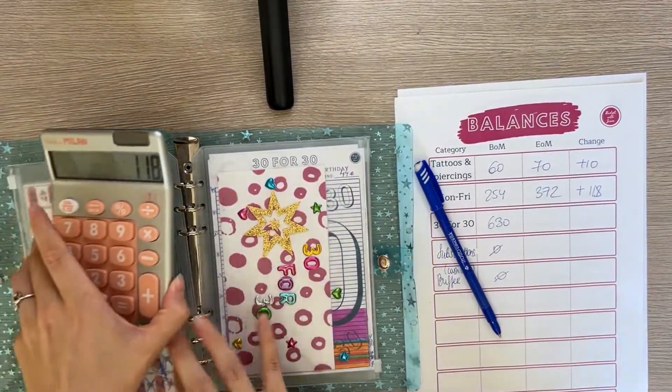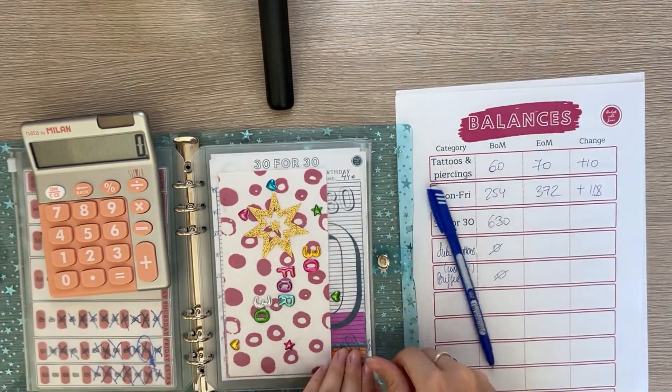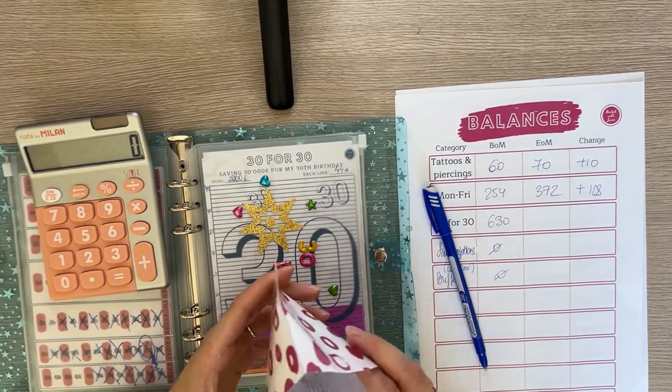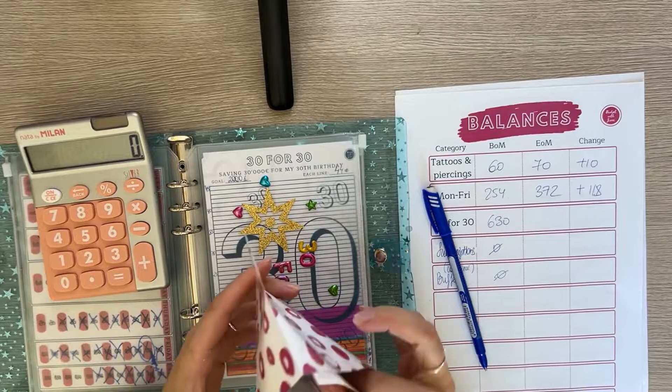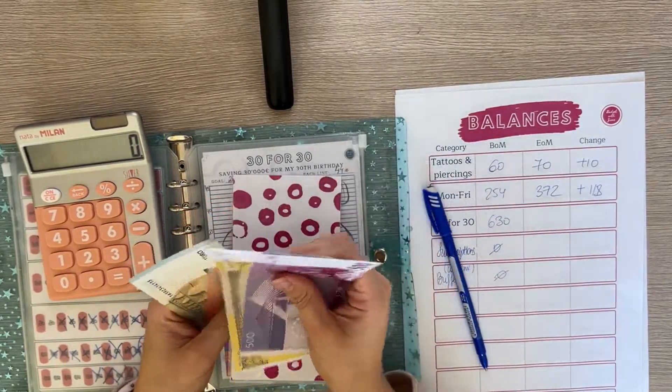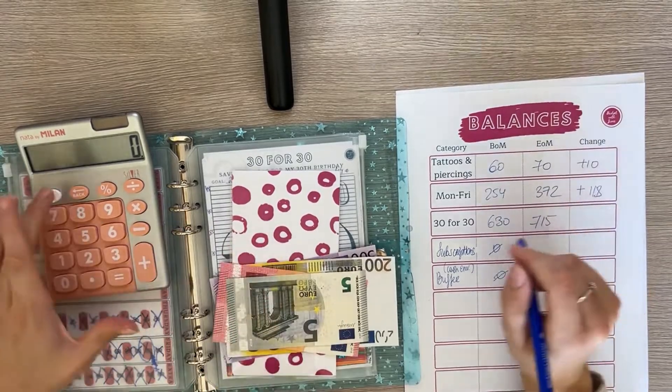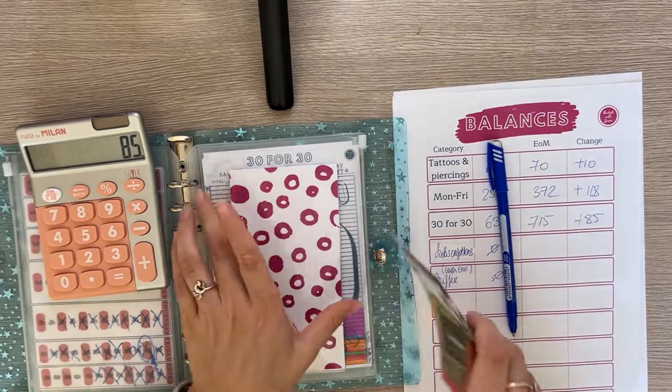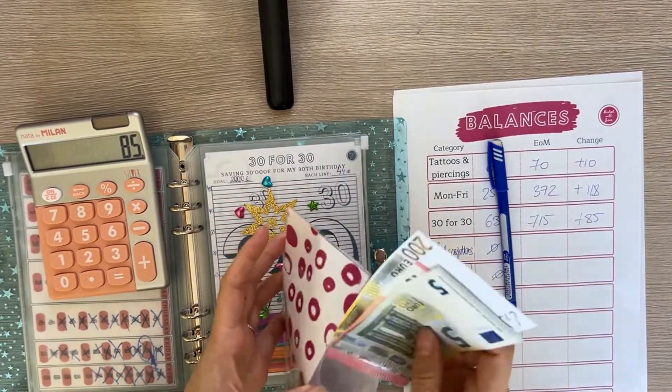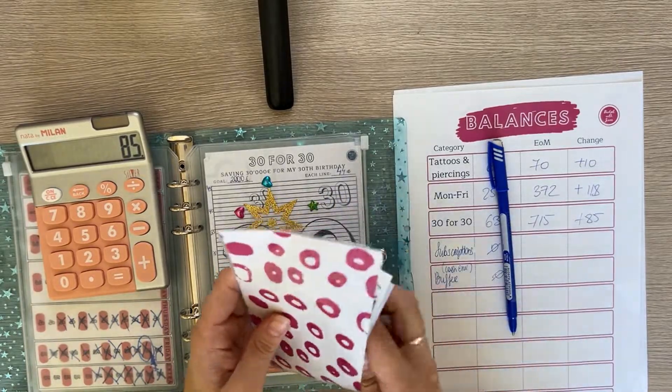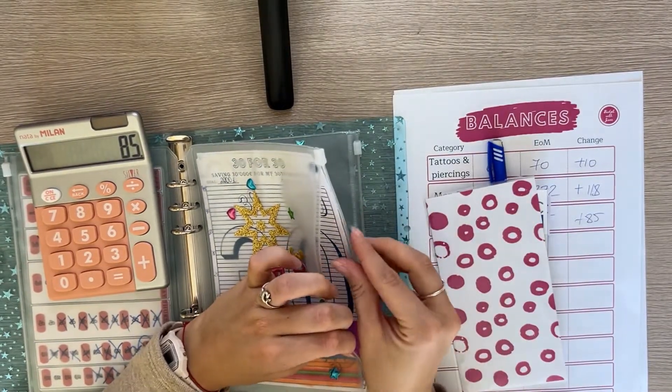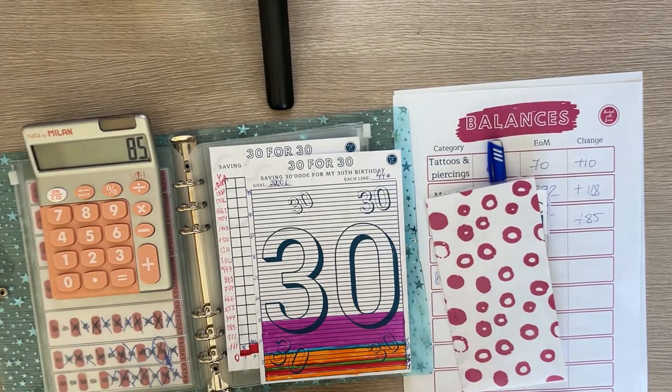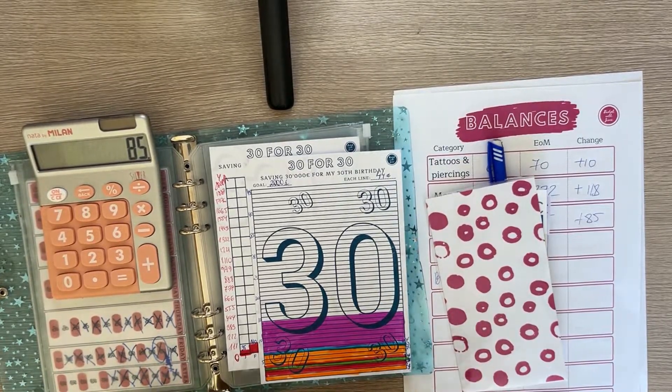30 for 30 is next. It had $630 at the beginning of the month and now it has $715 so that's a positive 85 euro difference. We can take out the trackers and color in and see the graph. If you're new here and you don't know what this challenge is, it's me saving 30,000 euros before my 30th birthday which is in six years.